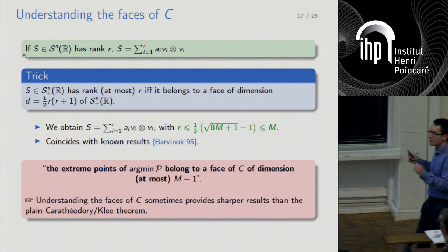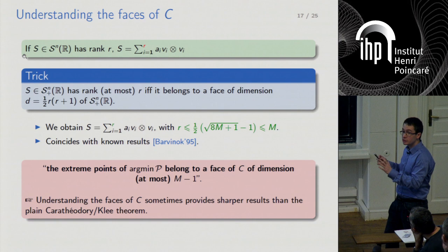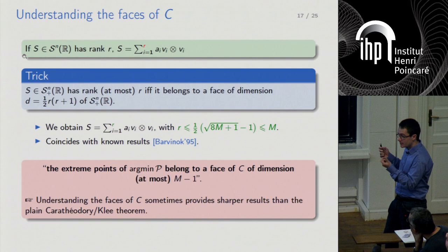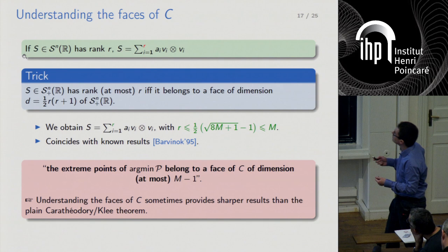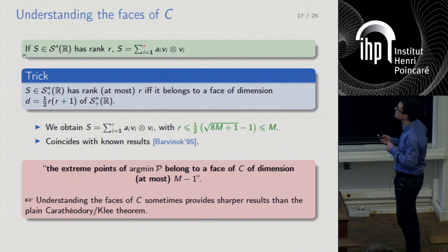The main message of the theorem is that extreme points of your solution set belong to a face of dimension at most m-1. If you have precise information on the structure of the faces of your regularizer, you can say more than simply the sum of m atoms. Knowing the faces is a key point in this representer theory.